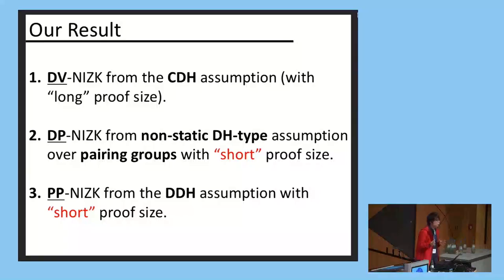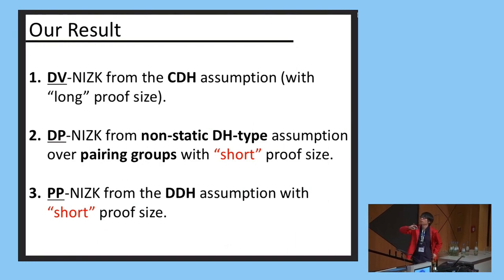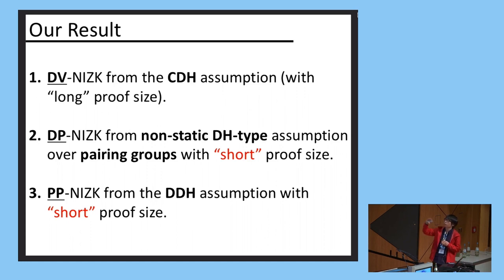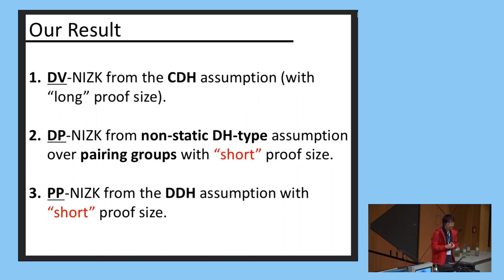This is our result. As Jafar told us, the first one is the same for all three groups. We got a designated verifier NIZK from the CDH assumption. The proof size is rather long, so in our paper what we did is that we actually considered the short proof size setting. We modified the setting from DV-NIZK to designated prover NIZK and preprocessing NIZK, and we got short proof size by changing the model a little bit. All these are obtained through Diffie-Hellman type assumptions.